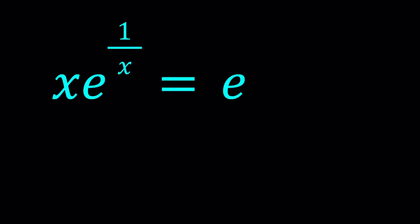Hello everyone. In this video we're going to be solving a nice exponential equation. We have x times e to the power 1 over x equals e, e being the Euler's number, you know 2.7 something. And we're going to be solving for the x values.